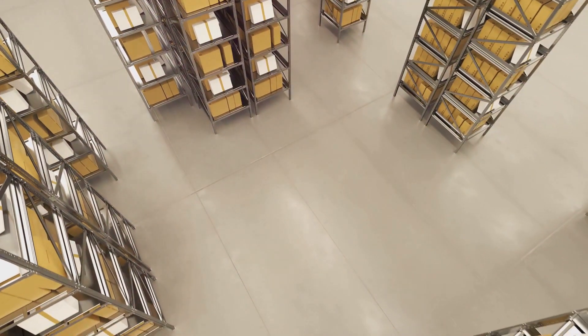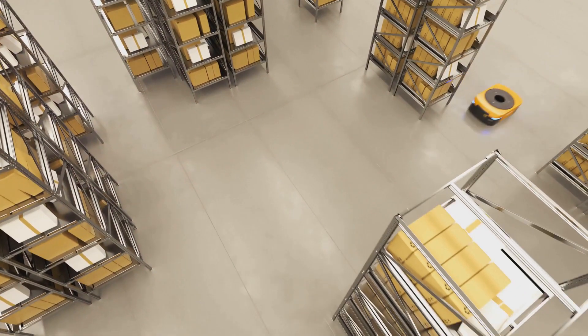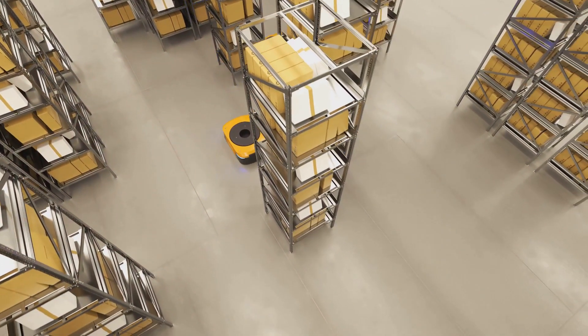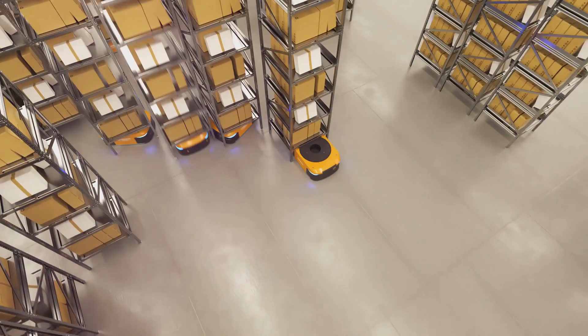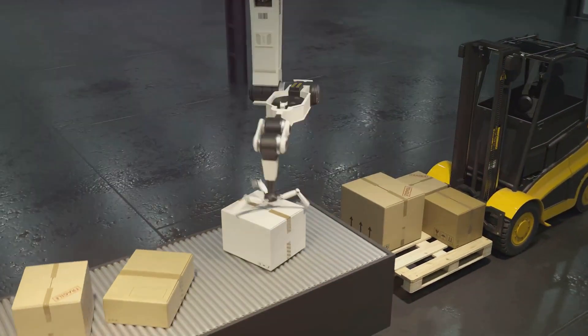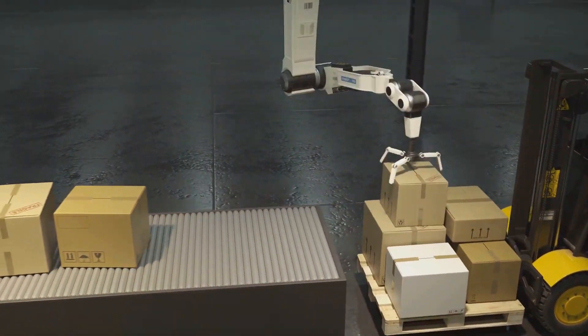In the world of logistics and supply chain, robots are streamlining processes and improving accuracy. Automated warehouse systems can pick, pack, and sort items faster and more accurately than their human counterparts. These systems can operate around the clock, greatly increasing productivity.